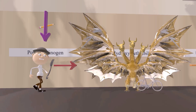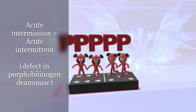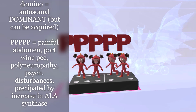Sometimes the 'cute intermission' girls appear — representing acute intermittent porphyria, which involves a defect in porphobilinogen deaminase, disrupting conversion of porphobilinogen to hydroxymethyl bilane. They stand on a domino for autosomal dominant inheritance. The five peas represent the five P's of acute intermittent porphyria: painful abdomen, port-wine colored pee, polyneuropathy, psychological disturbances, and precipitated by factors that increase ALA synthase such as drugs, alcohol, and starvation.